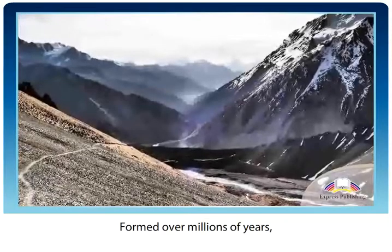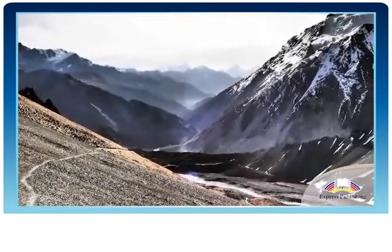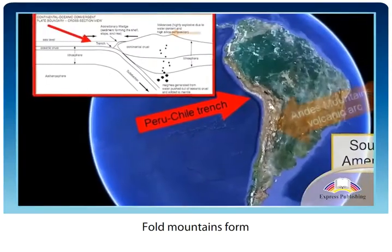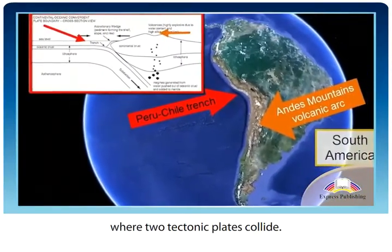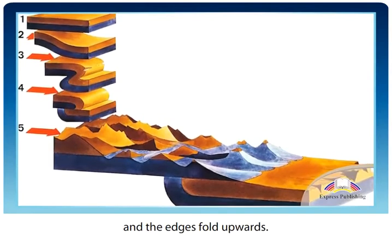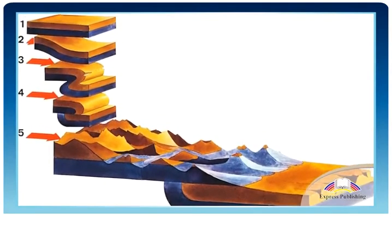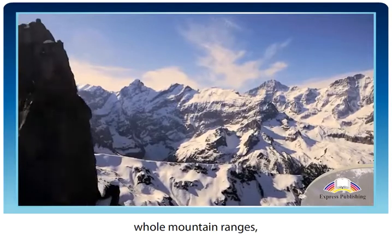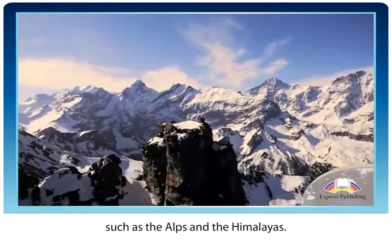Formed over millions of years, the most common type of mountain is the fold mountain. Fold mountains form where two tectonic plates collide. The plates push against each other and the edges fold upwards. These folds can form whole mountain ranges, such as the Alps and the Himalayas.